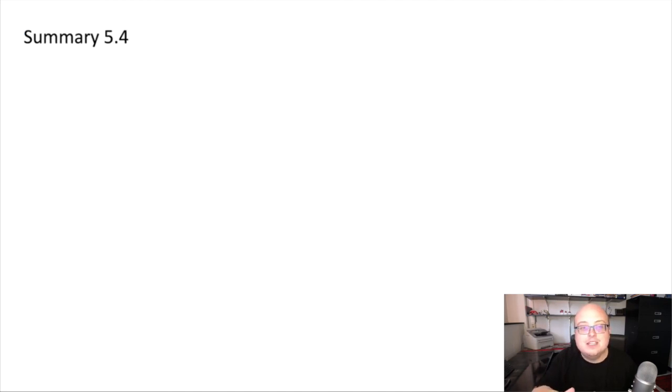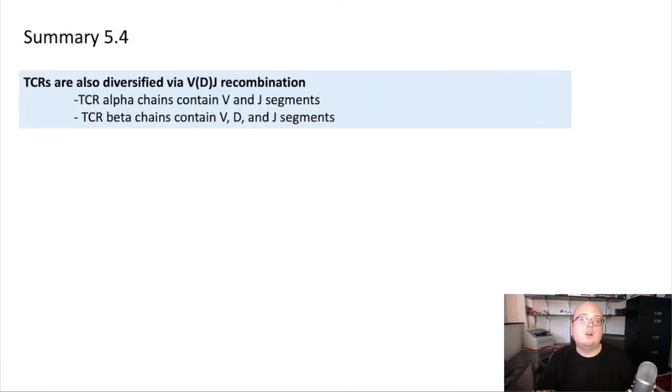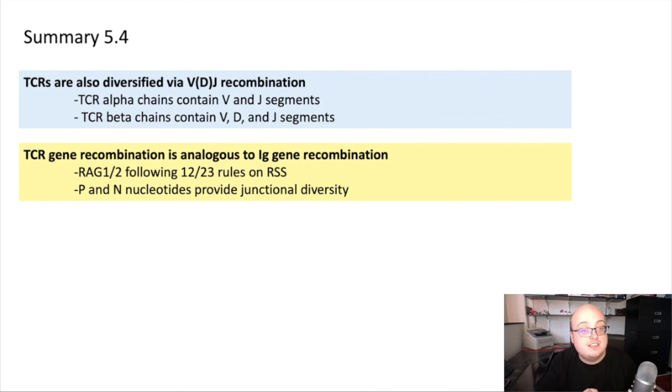Let's summarize the T-cell receptor components. TCRs are also diversified via VDJ recombination, similar to immunoglobulins. The TCR alpha chain contains V and J segments, similar to the light chain of Ig, whereas the TCR beta chains contain V, D, and J segments, similar to immunoglobulin heavy chains. TCR gene recombination is analogous to immunoglobulin gene recombination. It follows the same rules. RAG1 and 2 recombine the segments following the 12 to 23 rule depending on the recombination signal sequences.